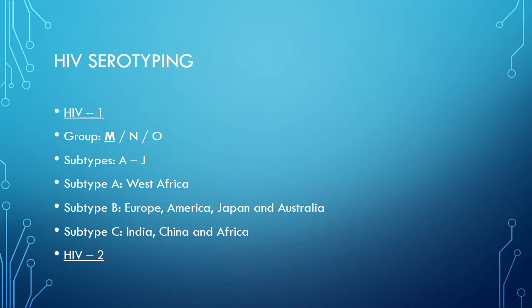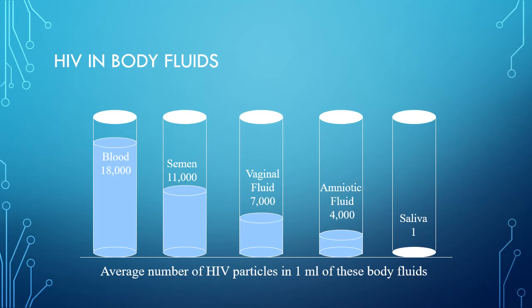HIV-2 comprises eight groups (A to H), mainly confined to Africa and a few other places including India; Group A is the most common. Among HIV-1 and HIV-2, HIV-1 is most common and mostly seen in India. This picture shows the average number of HIV particles per 1 mL of body fluids: blood has 18,000 HIV particles, semen 11,000, vaginal fluid 7,000, amniotic fluid 4,000, and saliva only 1.